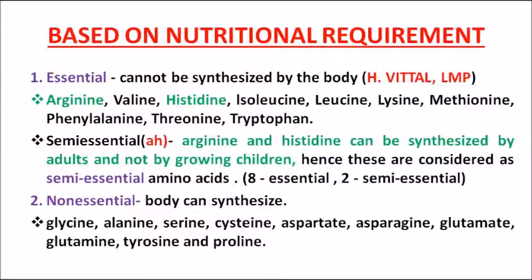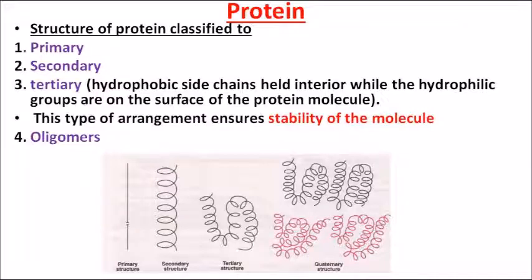Moving on to protein structure — proteins can exist in primary, secondary, tertiary, and quaternary (oligomeric) forms. A protein is a component made up of amino acids linked in a chain. They exist as a primary structure as a single chain. When you give it a twist and turn it becomes a secondary structure.